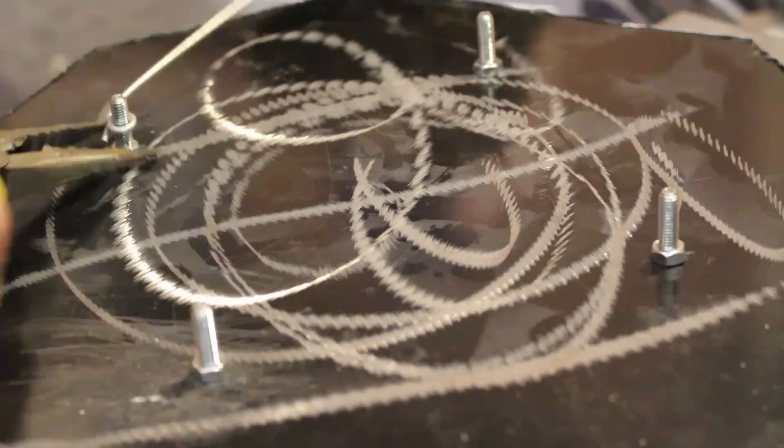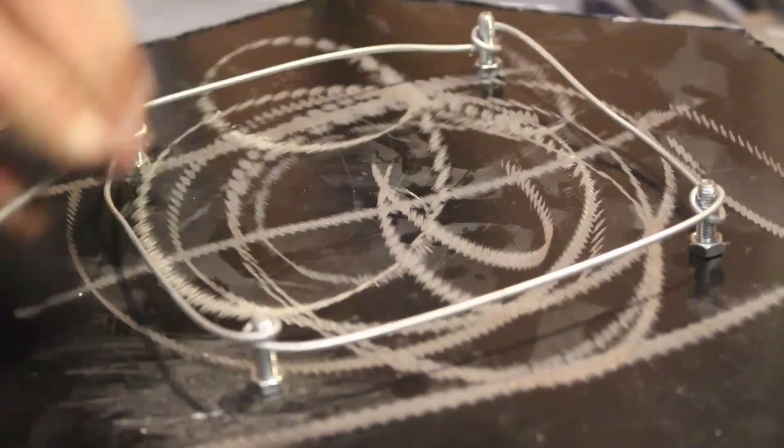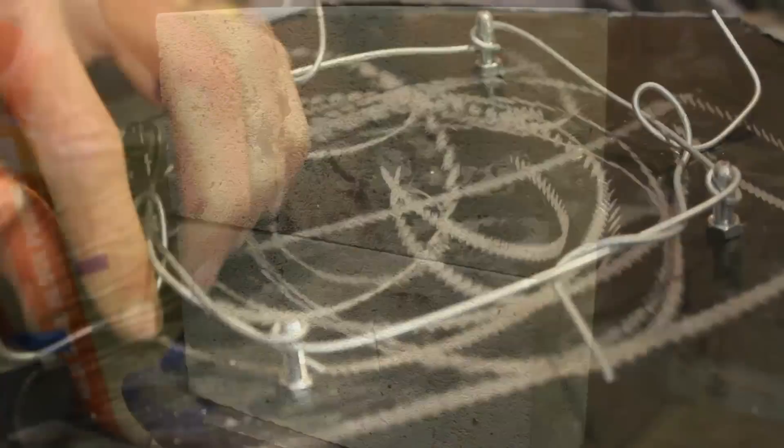I then took some wire and bent it around the bolts creating sort of a string pattern all the way around the bolts, made sure that it was really tightly wrapped around the bolts so it couldn't come undone and you'll see what this is going to be used for in a minute.